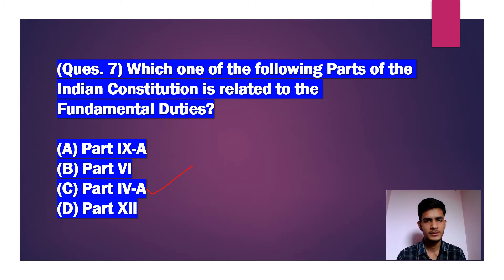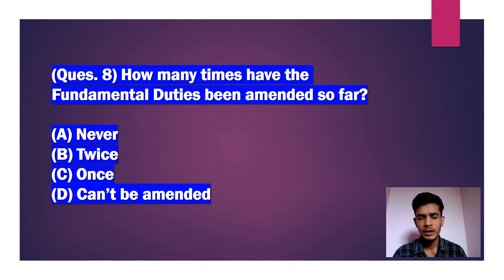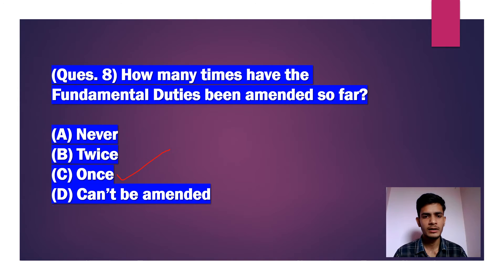How many times have the fundamental duties been amended so far? The answer is once — Option C. The fundamental duties were originally added through the 42nd Constitutional Amendment, and the only subsequent amendment was the 86th Constitutional Amendment in 2002, which added the 11th duty to provide opportunities for education.